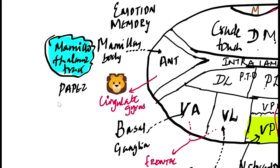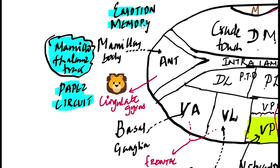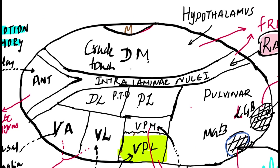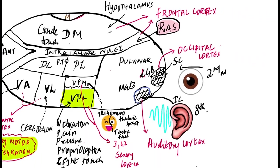The mammothalamic tract forms the Papez circuit. The mammothalamic tract is connected. So these are the connections of the thalamus — all connections are linked to the functions.